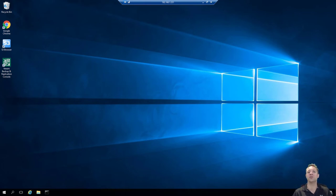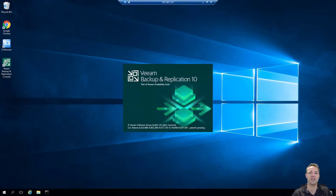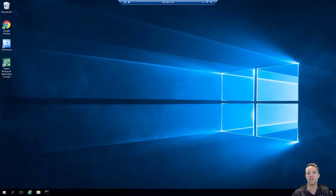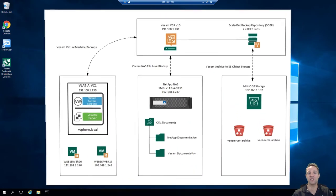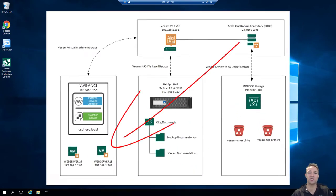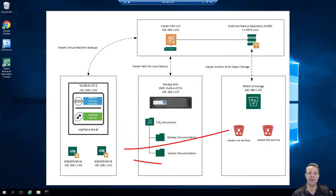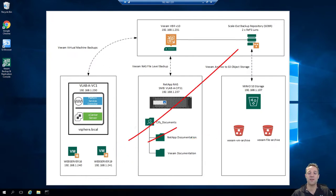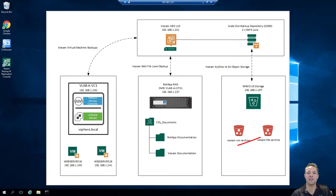Hello guys, welcome to part 2 of the Veeam Backup and Replication version 10 series. In this video we're going to be taking a look at restoring virtual machines and also restoring files from our CIFS server backups. First up we'll be looking at the virtual machine component where we'll be restoring a virtual machine from our scale-out backup repository, and then we'll be doing an instant VM restore from our S3 object storage. Thirdly we'll restore a file from within the VM backups, and then we'll move on to restoring files from our CIFS server backups.